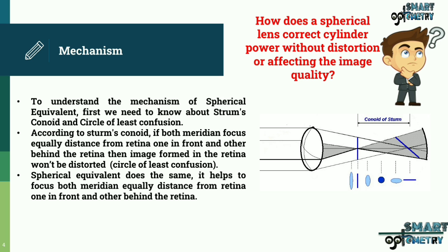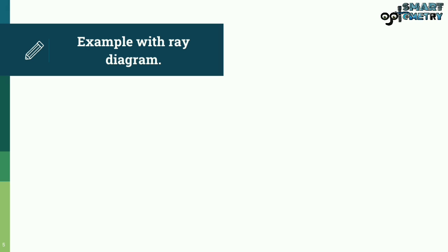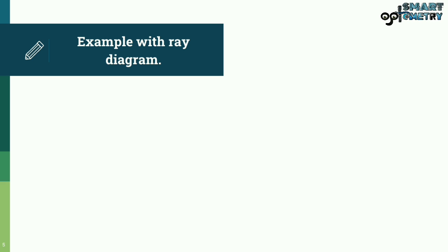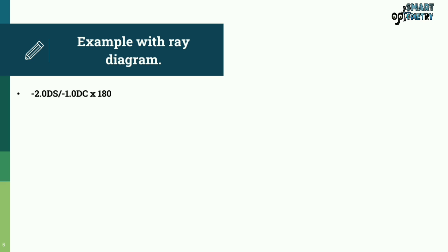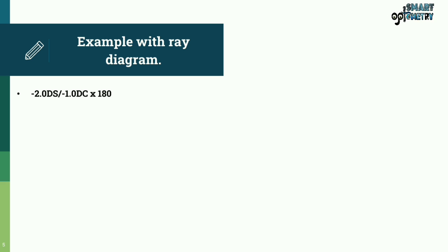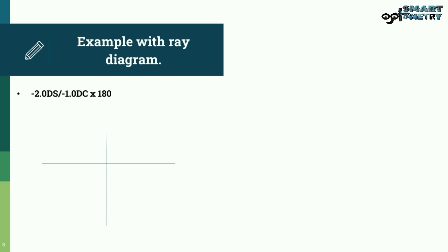Spherical equivalent does the same: it helps to focus both meridians equally distant from the retina, one in front and one behind. To understand the mechanism with an example and ray diagram, we will take the same example as before: minus 2 diopter spherical with minus 1 cylinder at 180 degree axis. Now let's distribute this power meridian-wise.